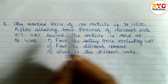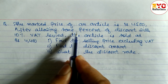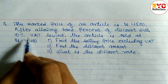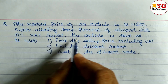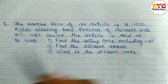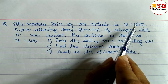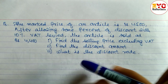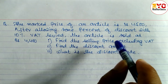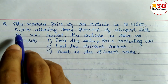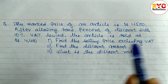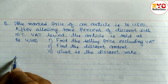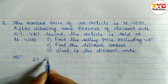Next question: The mark price of an article is Rs. 4500, so MP = 4500. After allowing some percent of discount with 10% VAT, the article is sold at Rs. 4400. This selling price of Rs. 4400 is SP with VAT — it includes the discount first, then VAT is added, and then the article is sold.